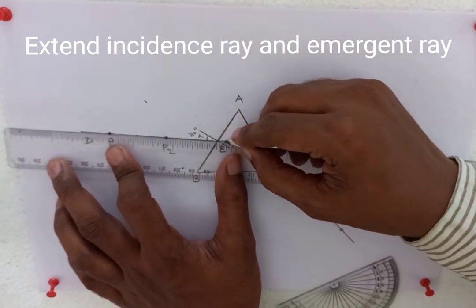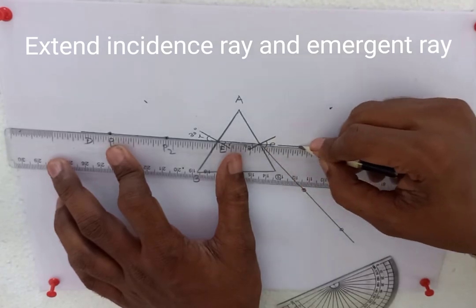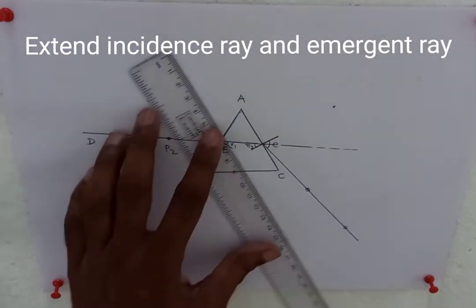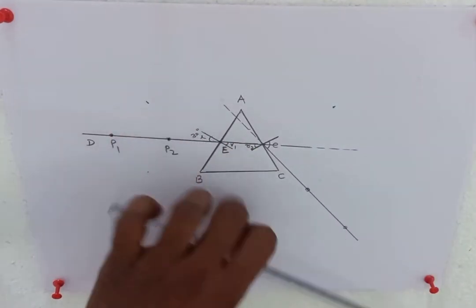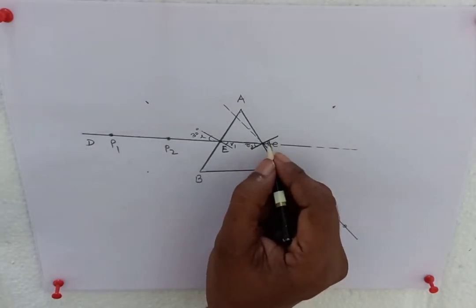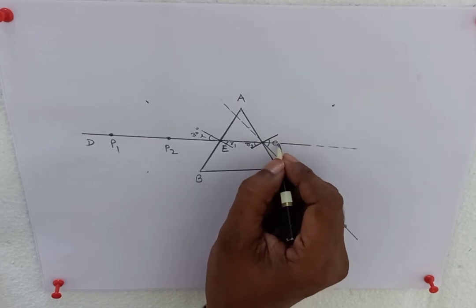Extend incidence ray and emergent ray. At the point of deviation, mention angle of deviation delta.